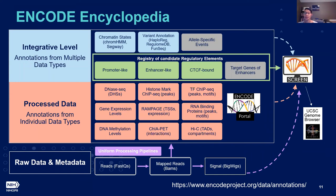The ENCODE portal allows you to search the metadata for ENCODE experiments and provides access to over 16,000 datasets. This includes data from all three phases and the current phase of the program, as well as data from other programs. We also have this tool SCREEN, and you'll hear more about the portal and SCREEN in other talks throughout this meeting.